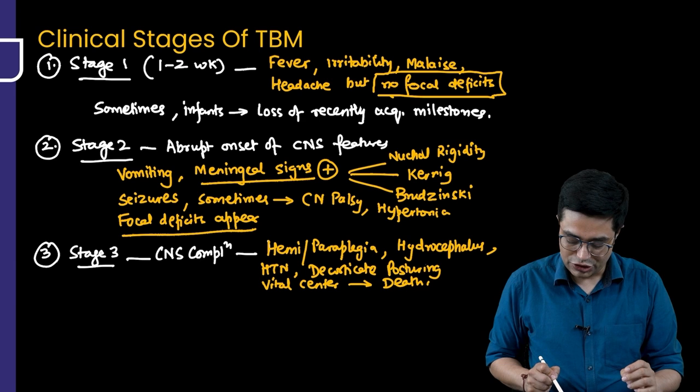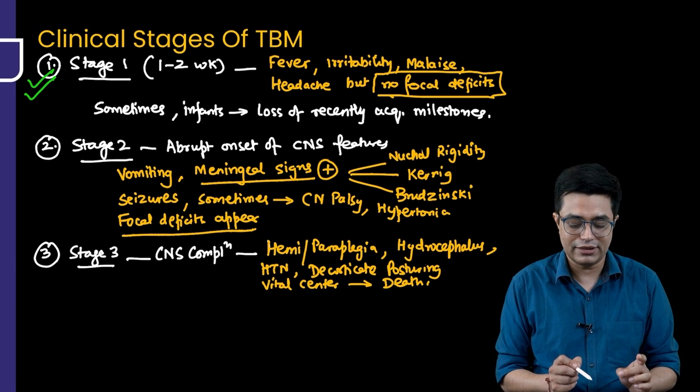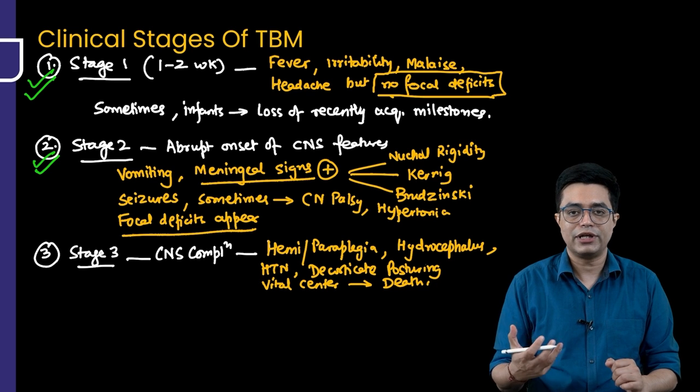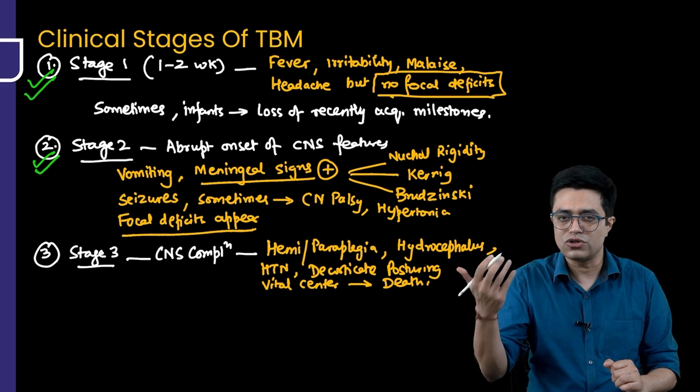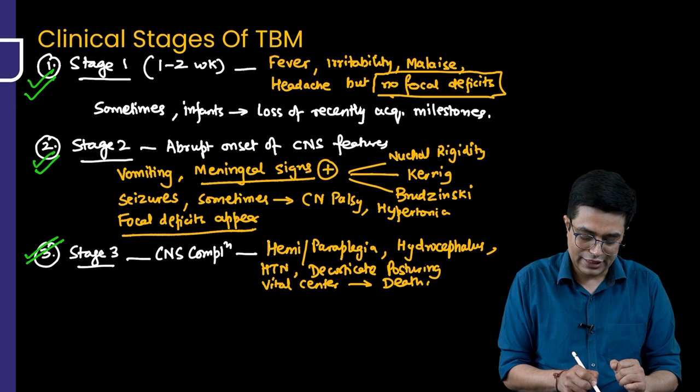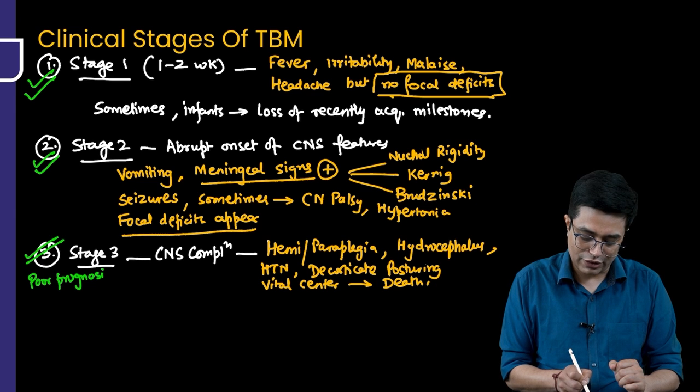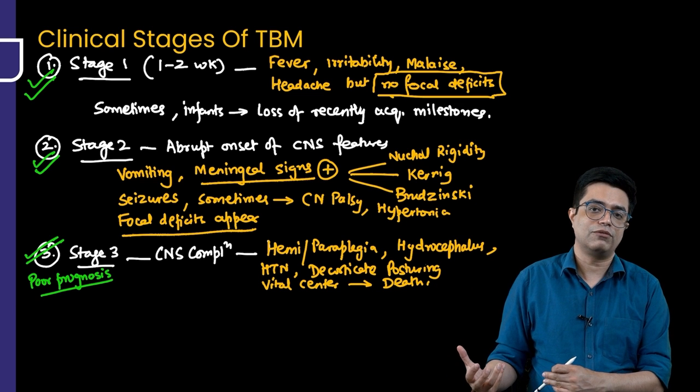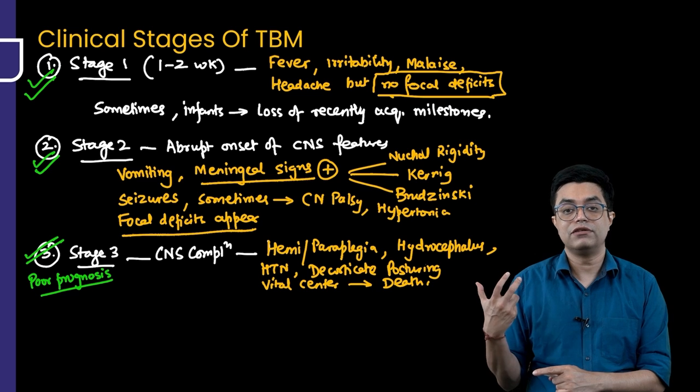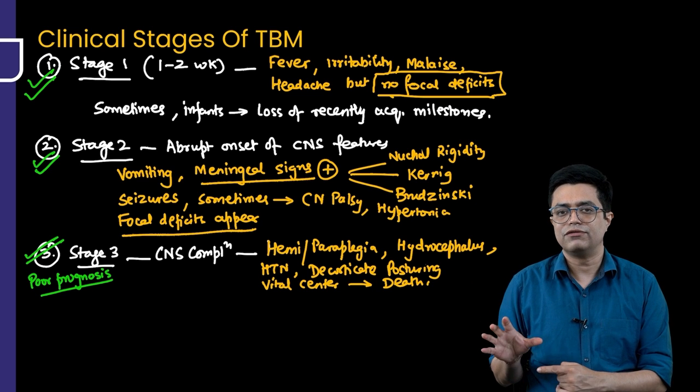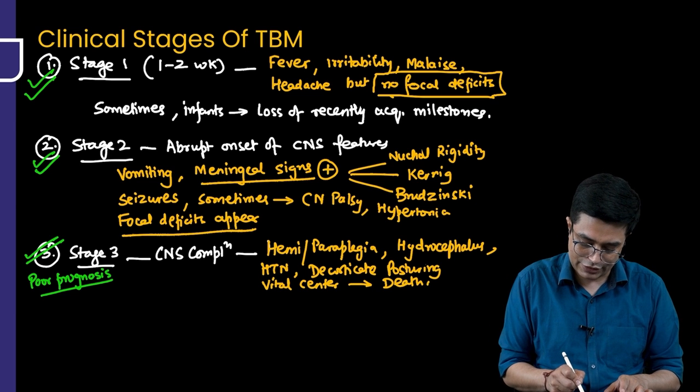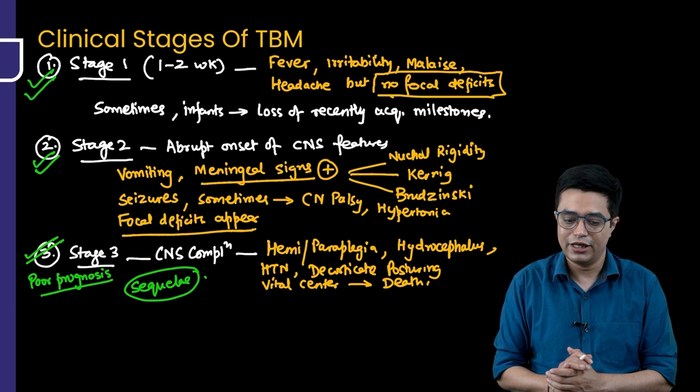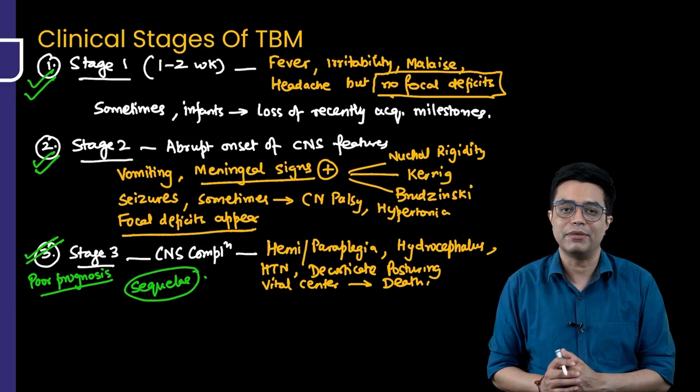Please understand that all the children who are in stage 1, if you do therapy in this stage, if you diagnose in this stage, they have an excellent outcome. Children with stage 2 features may require prolonged therapy, but they usually also have a good outcome. All the children who reach stage 3 have a poor prognosis. All the children who survive are usually left with some sequelae. The sequelae can be in the form of mental retardation, it can be in the form of persistent cranial palsies, it can be in the form of cortical blindness, it can also be in the form of deafness in the patient. If they ask you, sequelae are frequently found in which stage? They are found in stage 3, the CNS complication stage. These are the 3 clinical stages of tubercular meningitis that you should know.